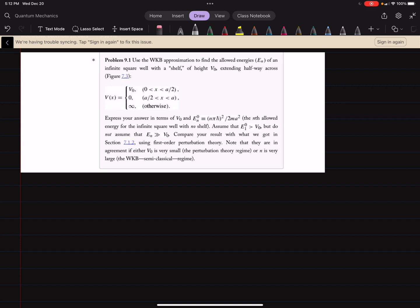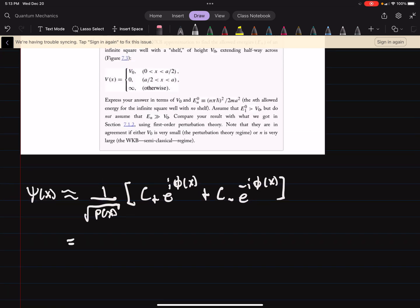Let's start with our approximate wave function: 1 over the square root of P(x) times C_plus e^(i*P(x)) plus C_minus e^(-i*P(x)). This can be expressed as 1 over the square root of P(x) times C1 sin(P(x)) plus C2 cos(P(x)), expressing it in terms of trigonometric functions.